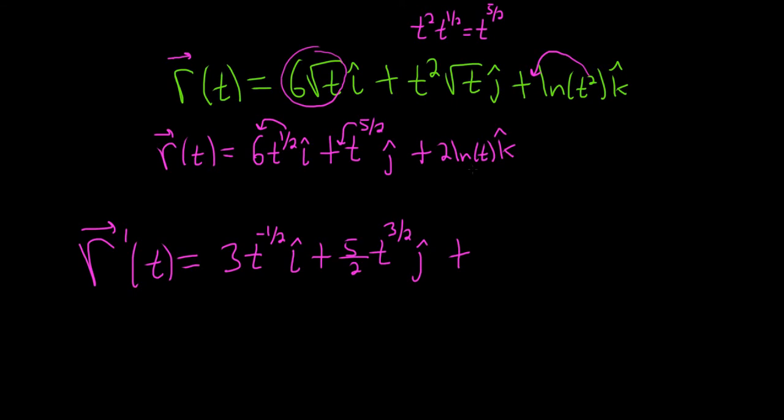and then 2 times the derivative of the natural log of t, which is just 1 over t. So we get 2 times 1 over t, which we can write as 2 over t. And then we have our k-hat.